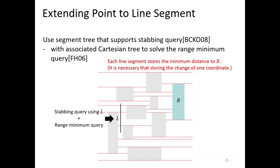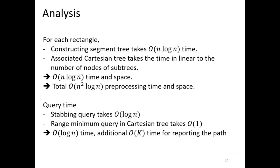For line segments contained in each node, we do a range-minimum query using an associated Cartesian tree. Then we can obtain the minimum distance from L to R and report the path. For each rectangle, we construct the segment tree and associated Cartesian tree, taking O(log N) time and space. Since the associated Cartesian tree takes time linear to the number of nodes, total preprocessing time and space are O(N² log N). Query time is O(log N + K): the stabbing query in the segment tree takes O(log N) time producing O(log N) nodes, and the range-minimum query in the Cartesian tree takes constant time per node.